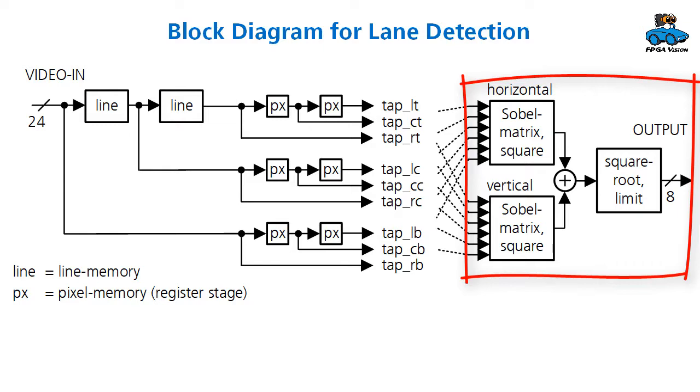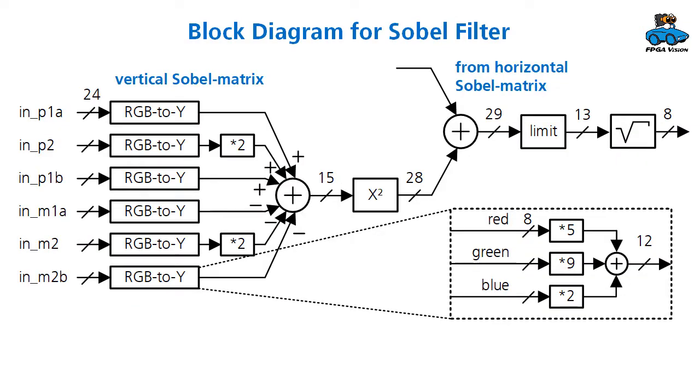The taps are given to the Sobel matrix for horizontal and vertical filtering. And this region we have in some more details. In the second diagram, we have the RGB to Y conversion for the 6 input pixels, the arithmetic for combining them, taking the square of them, and adding it with the result from the other matrix. First, we now limit the value of the sum, then take the square root with the ROM. And in this diagram, you see the implementation of the RGB to Y conversion.